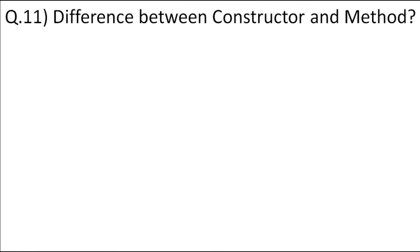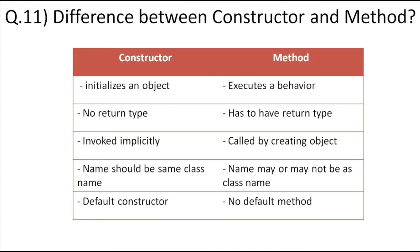What is the difference between a constructor and a method in Java? A constructor is used to initialize the object, while a method is used to perform various functionalities needed in the program. A constructor does not have any return type, but a method must have a return type — if it returns nothing, we write void. A constructor is invoked implicitly; a method is called by creating an object. The constructor name must match the class name, but this is not required for methods. There is an implicit default constructor, but there is no default method in Java.